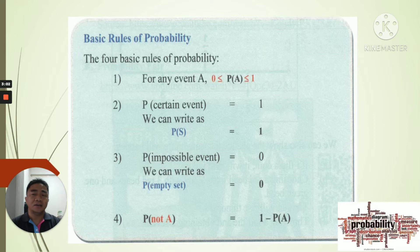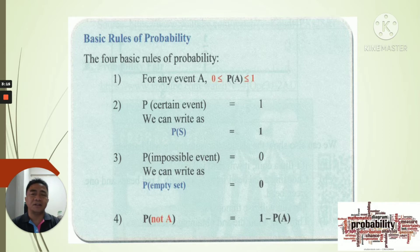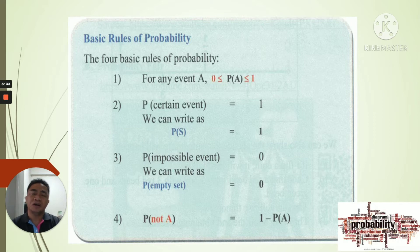First, the range of probability is greater than or equal to 0 but less than or equal to 1. Second, the probability of a certain event — like the sample space — is 1. Third, the probability of an impossible event, like an empty set, is 0. And fourth, the probability of not the event — the other outcomes — is 1 minus that event.